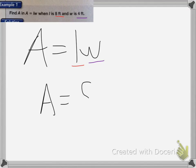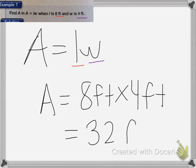Here we have find A in A equals LW when L is 8 feet and W is 4 feet. This is the formula for finding the area of a rectangle. So what it means is I have A equals LW. I'm going to put 8 feet in for L and 4 feet in for W, so I end up with A equals 8 feet times 4 feet, which is equal to 32 feet squared.